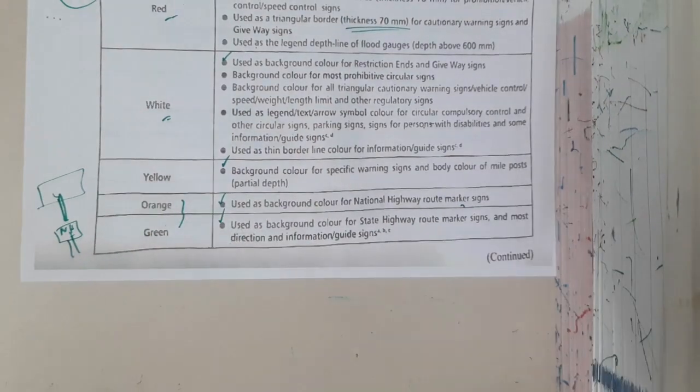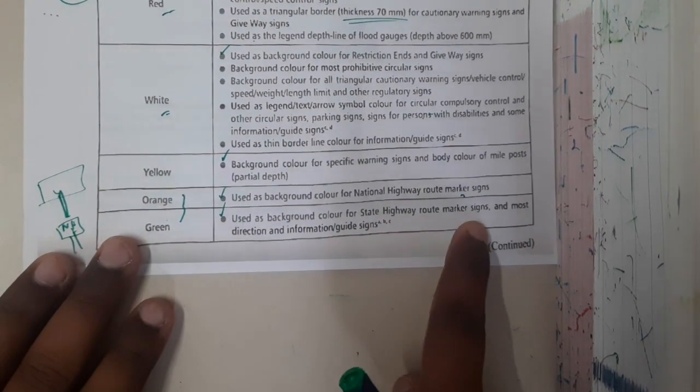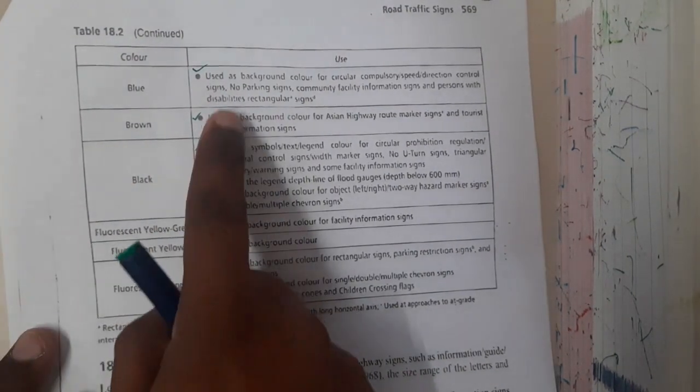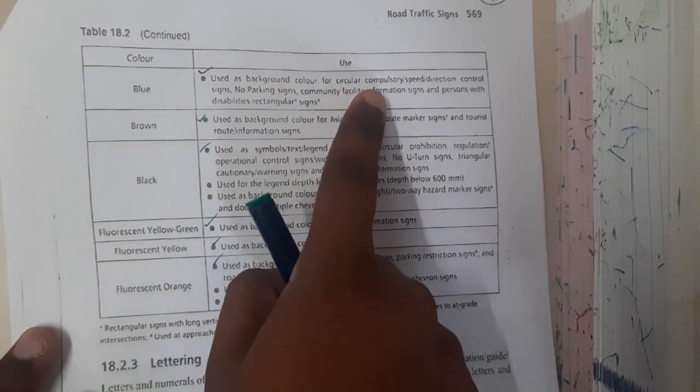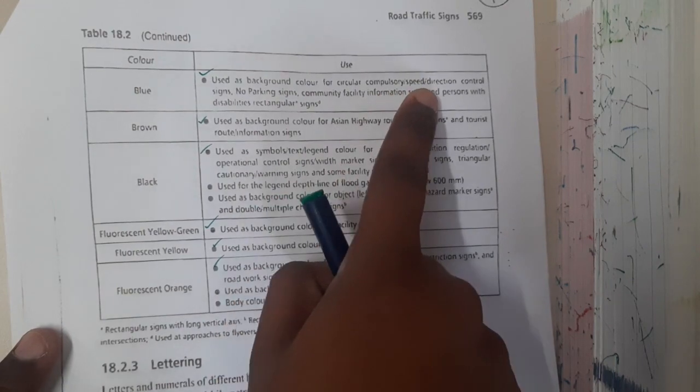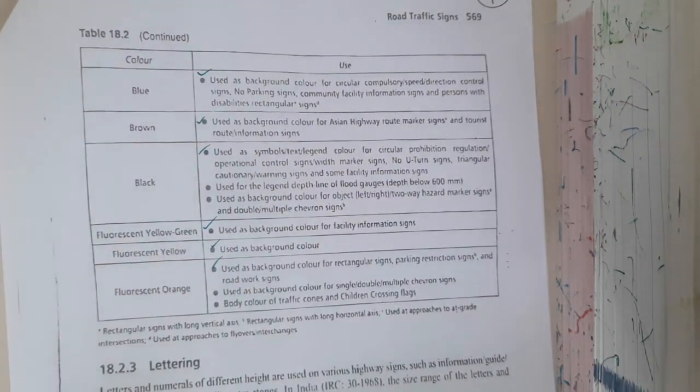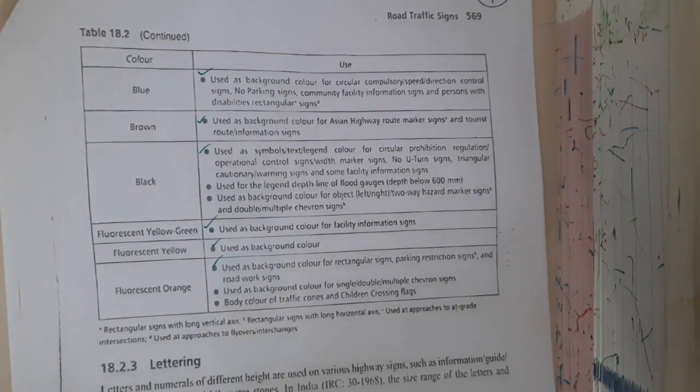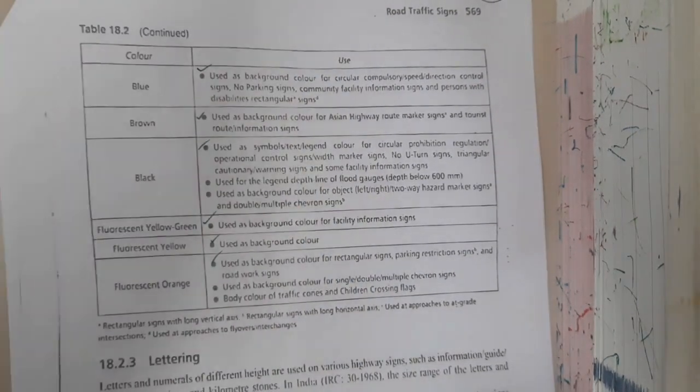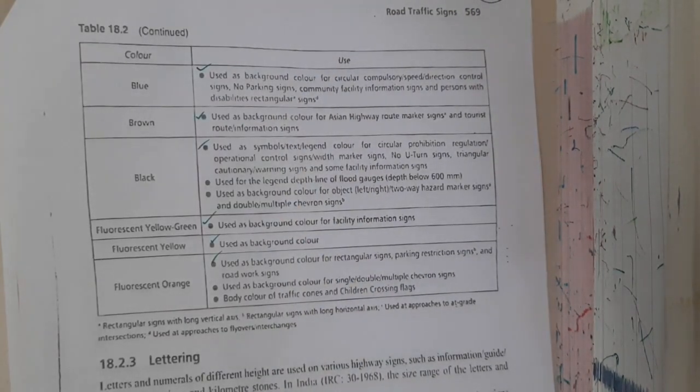Even for green also the same situation. Green and orange both are used for the same reason - road markings and signs and most of the directions. Similarly, we are also having blue color, used as a background color for information signs. Blue color has been used right here, yes exactly. I think that paper is used a lot.